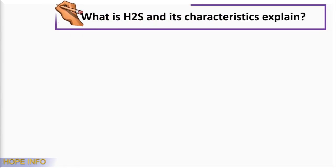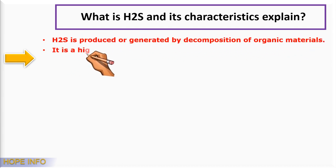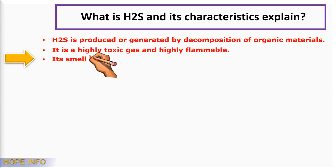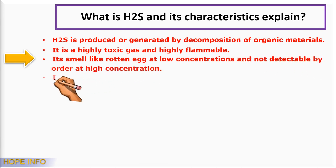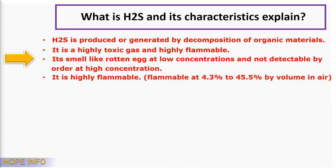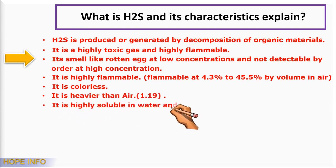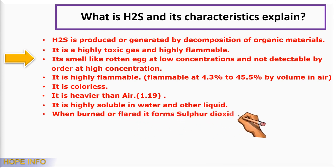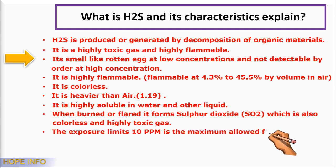What is H2S and its characteristics? H2S is produced or generated by decomposition of organic material. It is a highly toxic and highly flammable gas. It smells like rotten eggs at low concentrations and is not detectable by odor at high concentrations. It is flammable at 4.3% to 45.5% by volume in air. It is colorless and heavier than air (specific gravity 1.19). It is highly soluble in water and other liquids. When burned or flared, it forms sulfur dioxide (SO2), which is also colorless and highly toxic. The exposure limit is 10 ppm maximum, allowed for an 8-hour workshift.